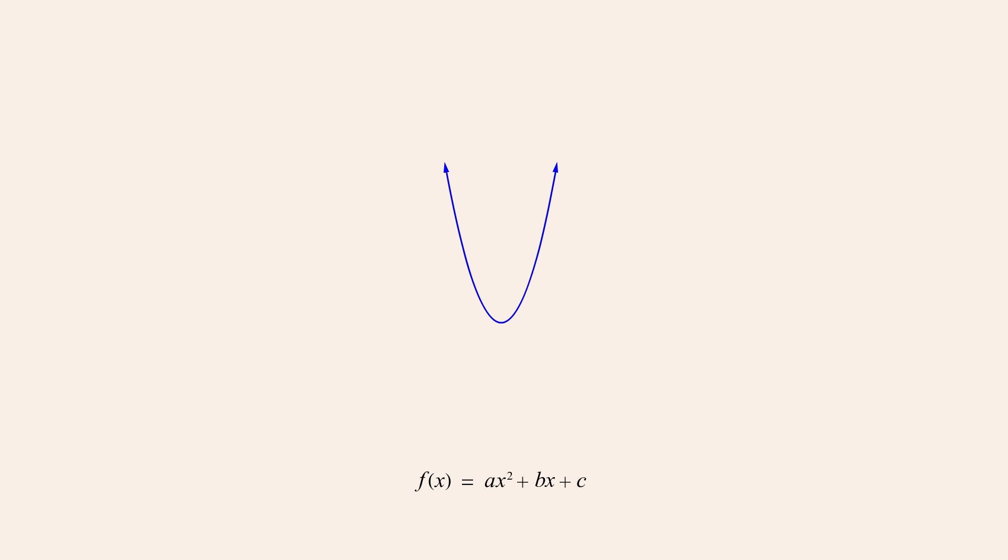The point where the parabola changes direction, sometimes referred to as its turning point, is called the vertex. And the vertical line that intersects the vertex is called the axis of symmetry.